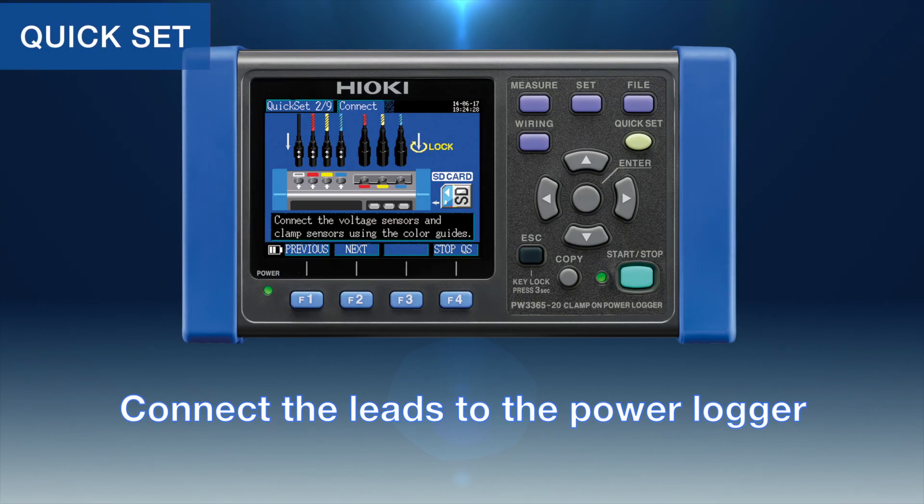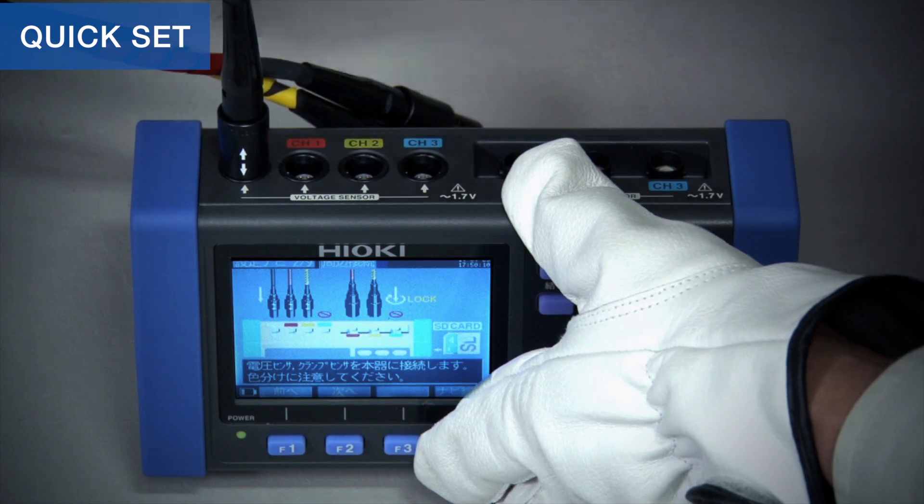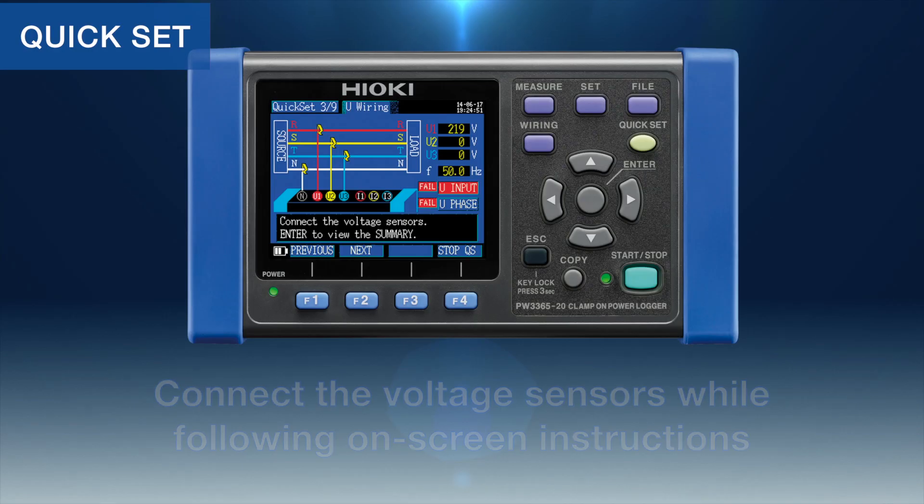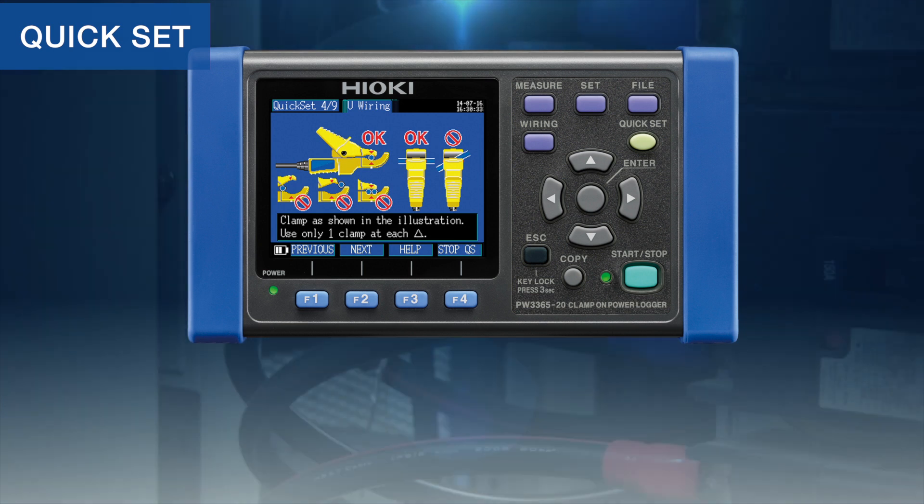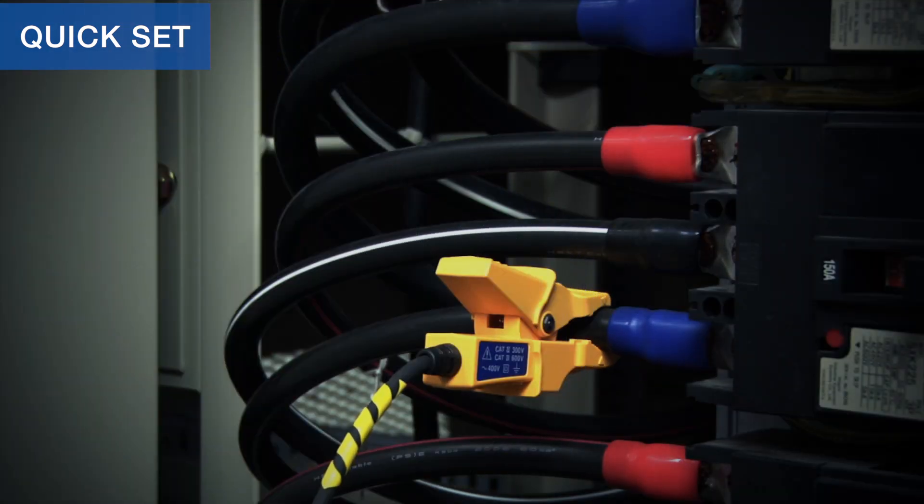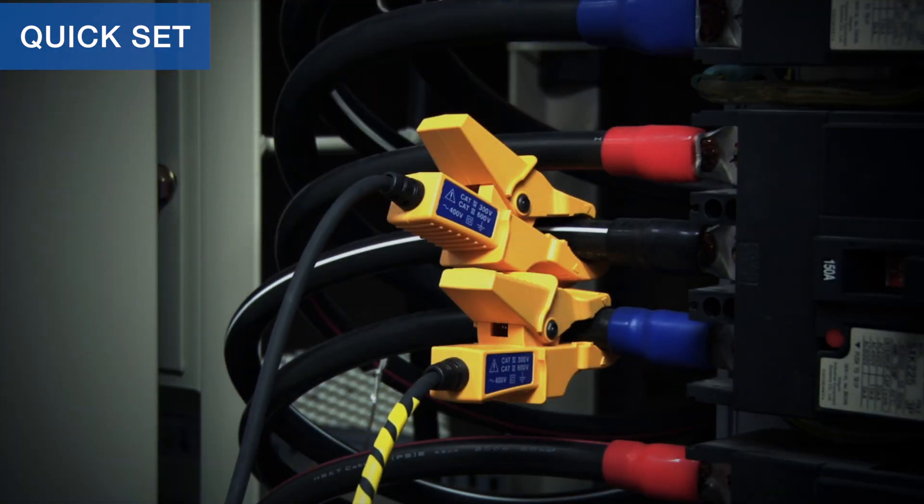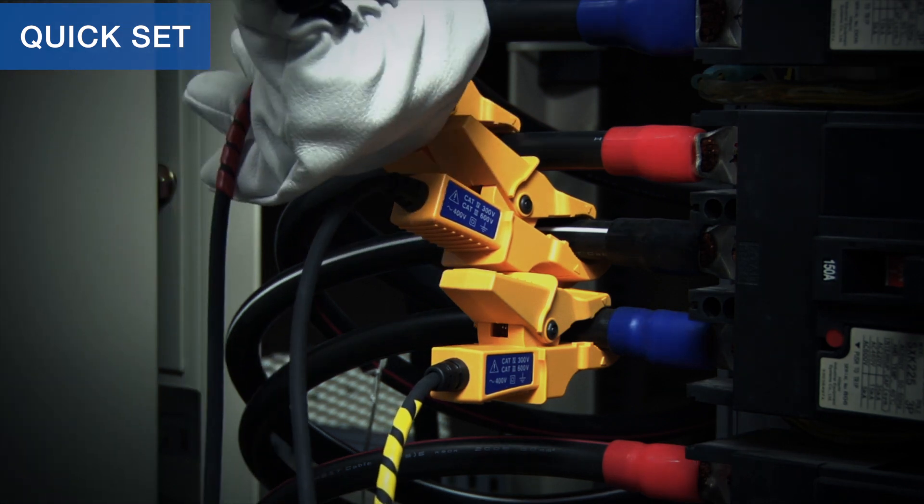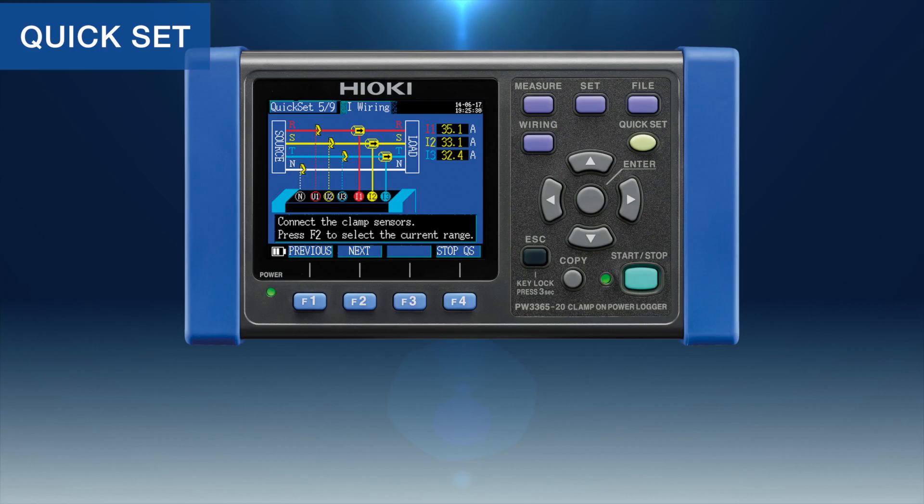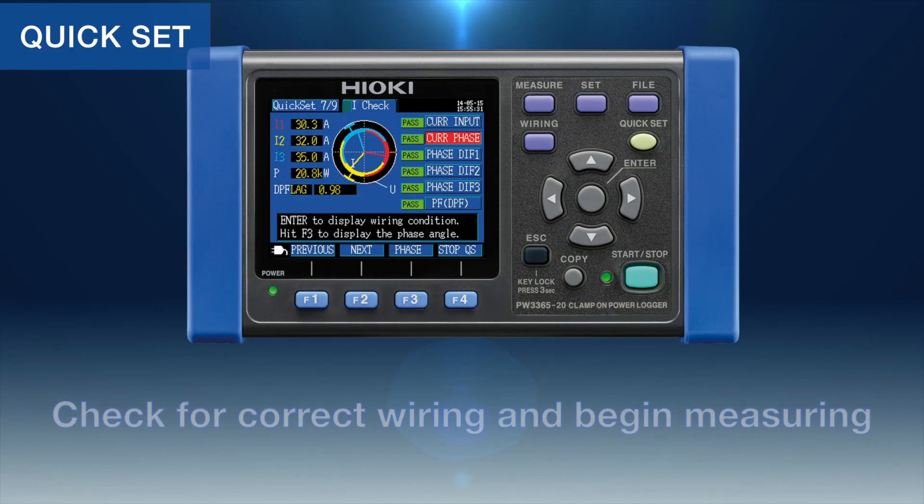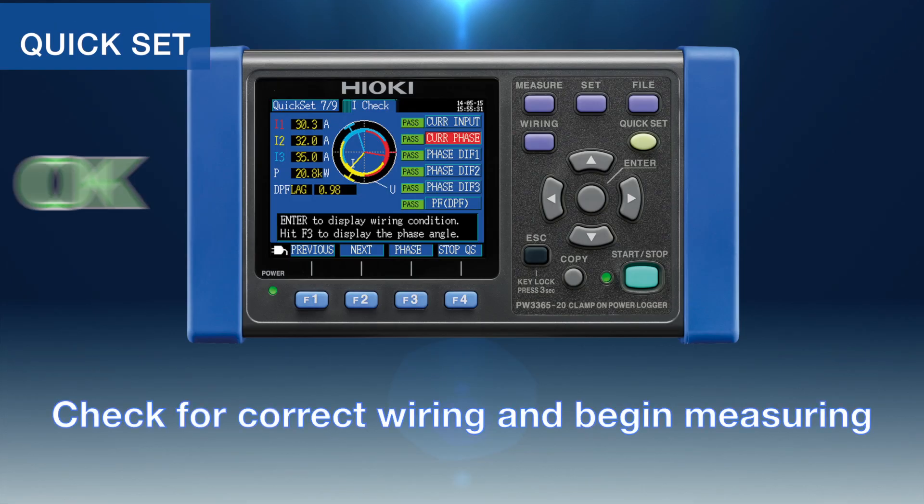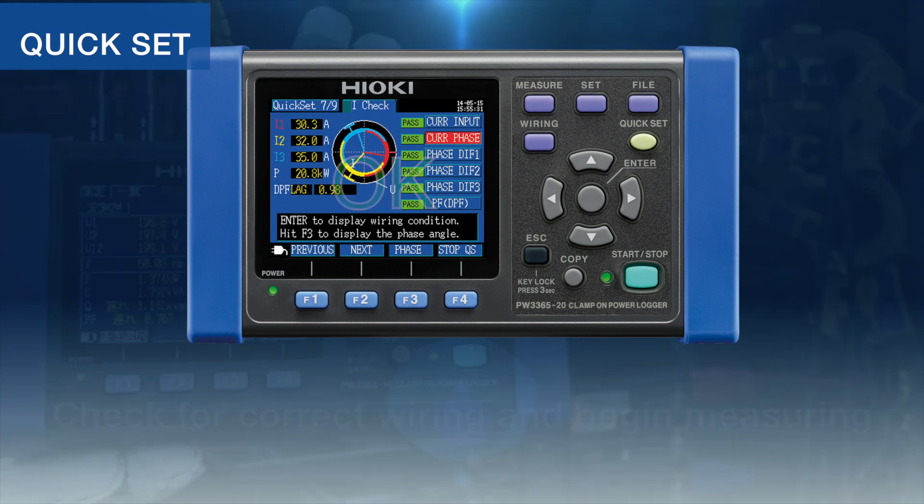Set up is a snap using the built-in quick set wizard. First, connect the voltage leads to the power logger and follow the on-screen instructions. Then clip the voltage sensors to the power cables. Next, connect the clamp sensors using the same procedure. Check the screen for correct wiring and begin measuring.